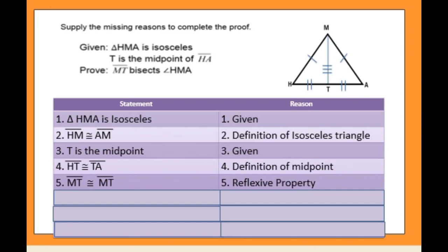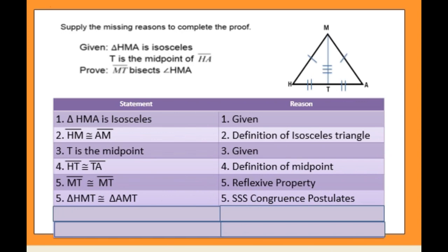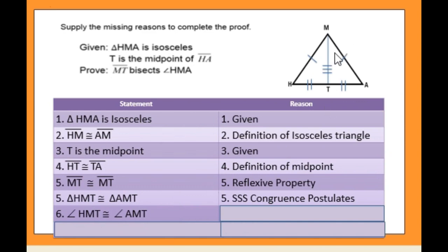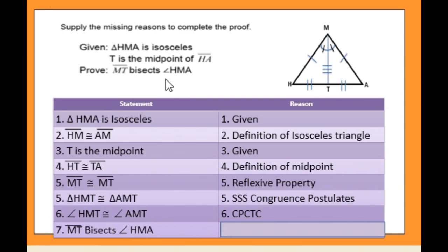Now we have triangle congruence: triangle HMT is congruent to triangle AMT — the reason is SSS congruence postulate. Since these two triangles are congruent, angle HMT is congruent to angle AMT — the reason is CPCTC, or corresponding parts of congruent triangles are congruent. Therefore, we can prove that line segment MT bisects angle HMA — the reason is definition of angle bisector.